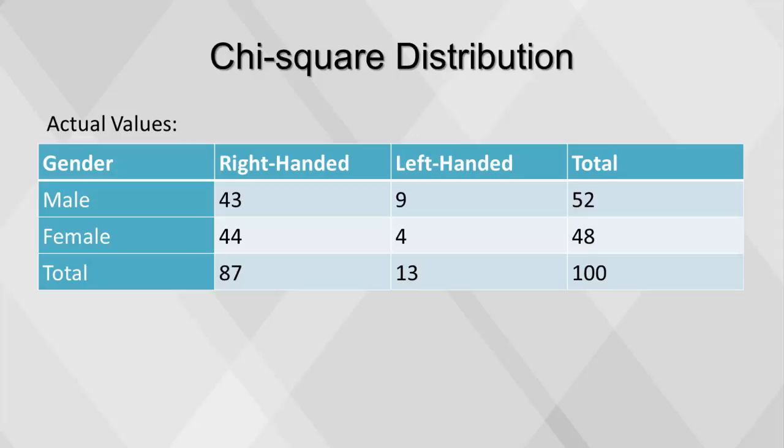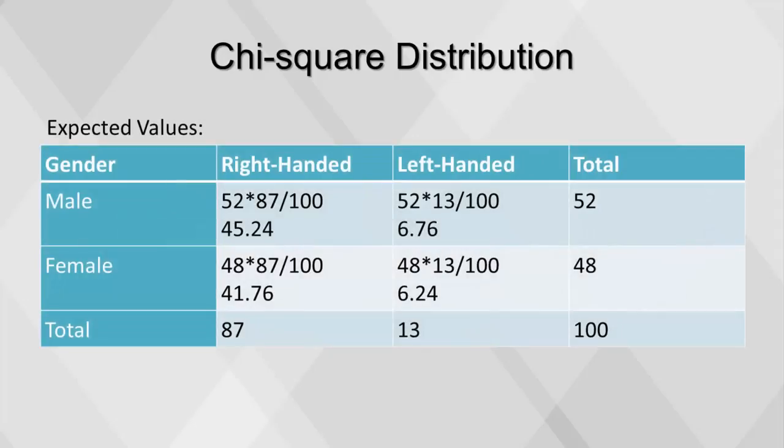In this example, to calculate the expected value for right-handed males, multiply 52, the total number of males, by 87, the total number of right-handed people, and divide by 100, the total number of people. Similar calculations are done for each cell.